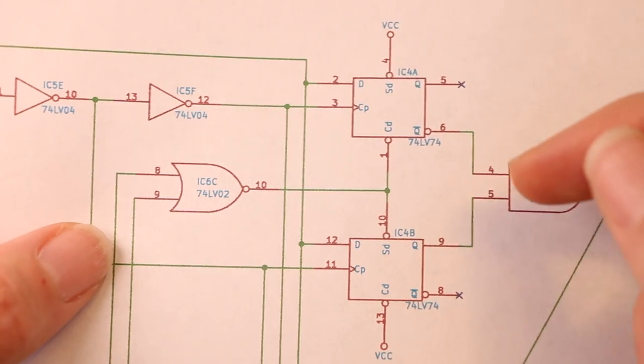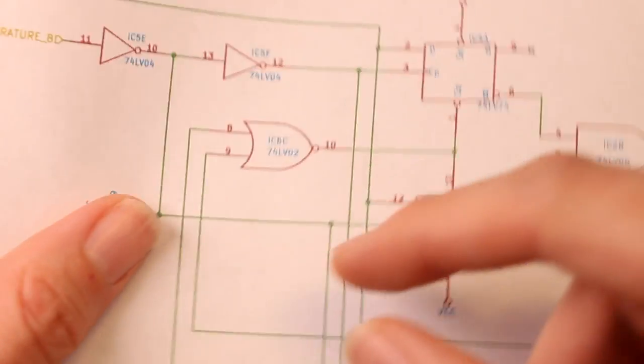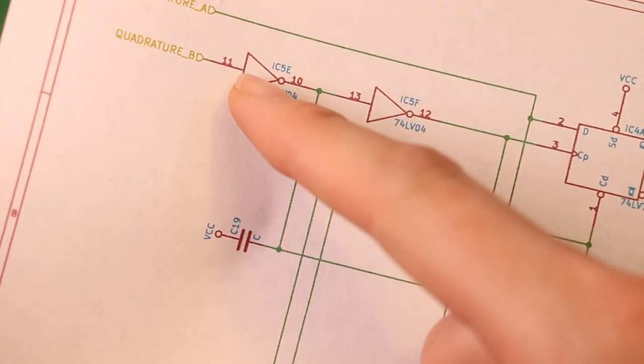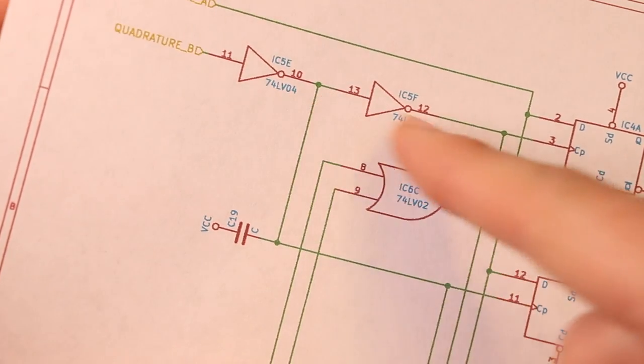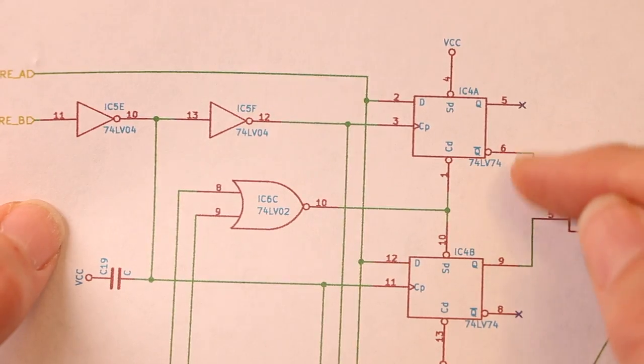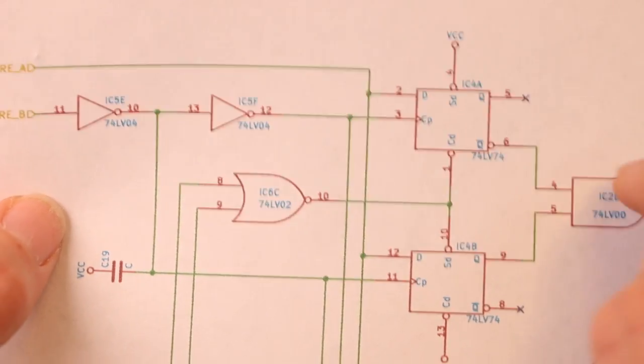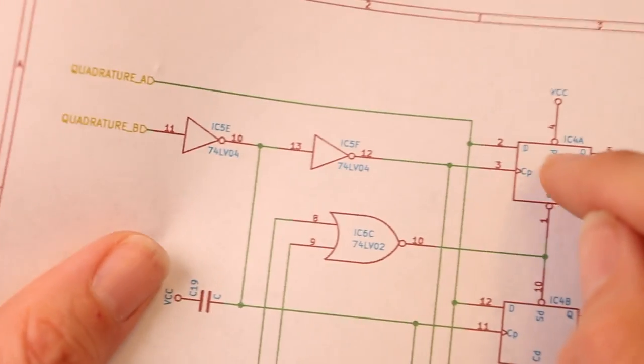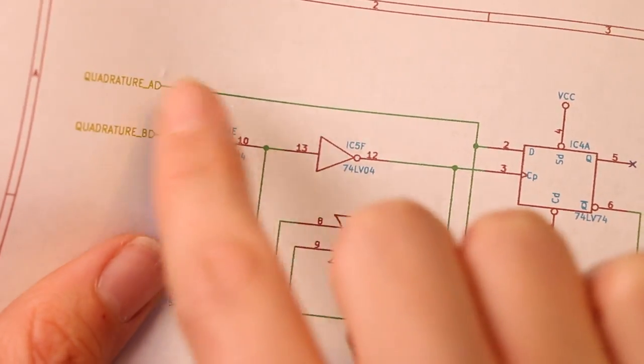The way these flip-flops are wired they can be set to sample either the positive or the negative edge of quadrature B using either this clock or this clock. By wiring either the inverting or the non-inverting output to this AND gate you can choose what state to require quadrature A to be in when that edge happened.